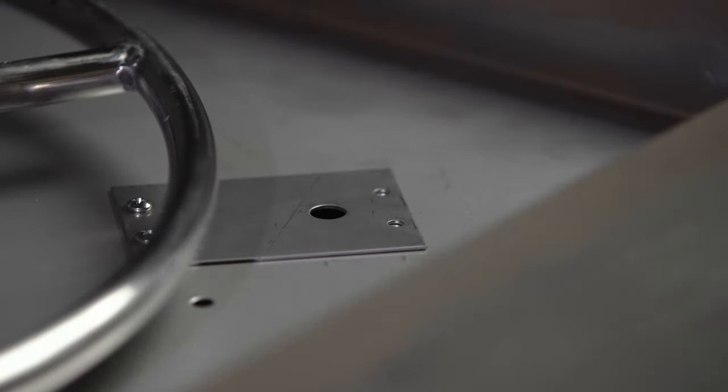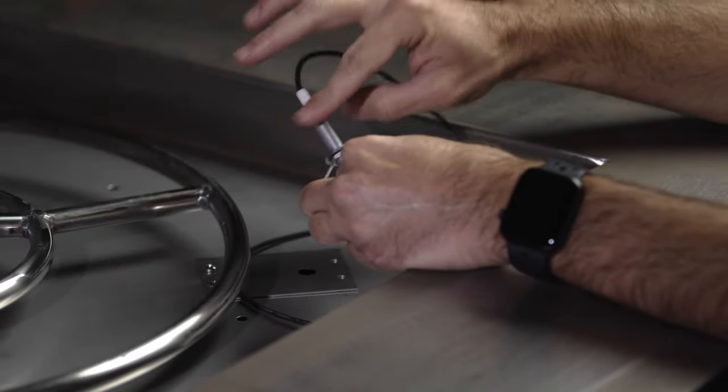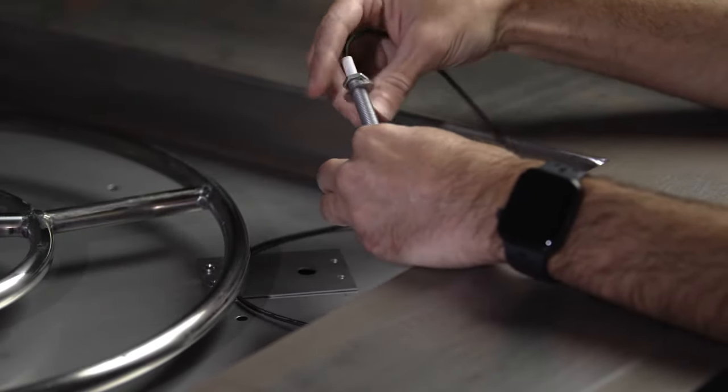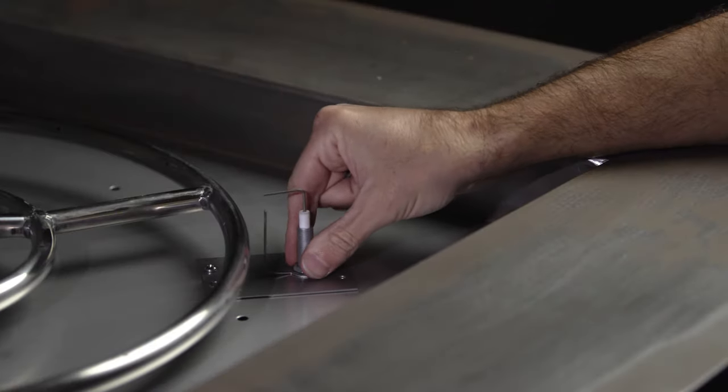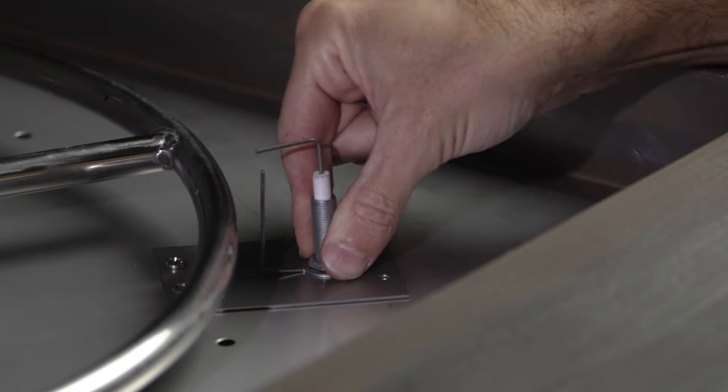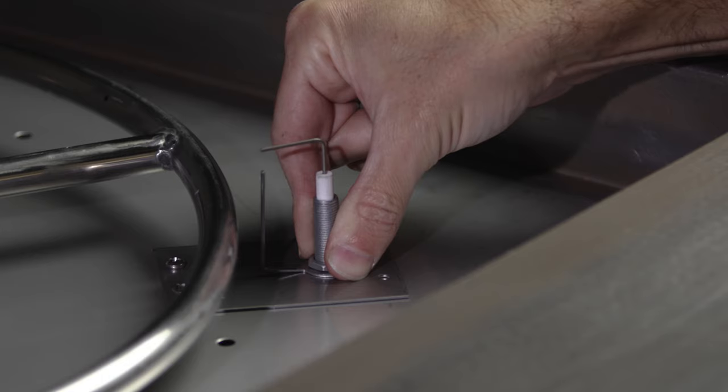There are two nuts securing the adjustable probe to the igniter probe. Remove the bottom nut, feed the wire down the half inch hole, and set your igniter probe in place. This is a good opportunity to adjust the top nut to position the adjustable probe to the right height, keeping in mind the height of the future media placement.